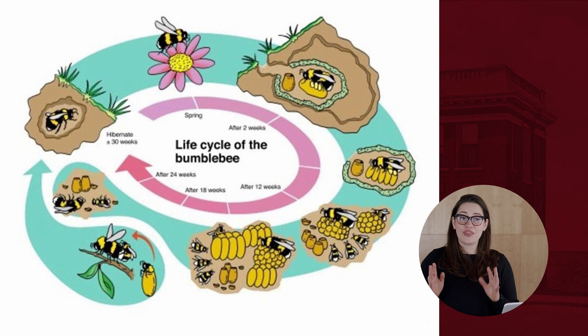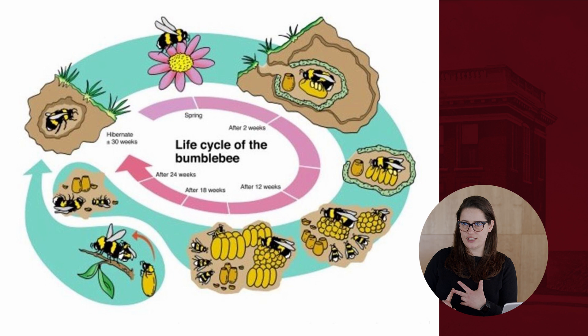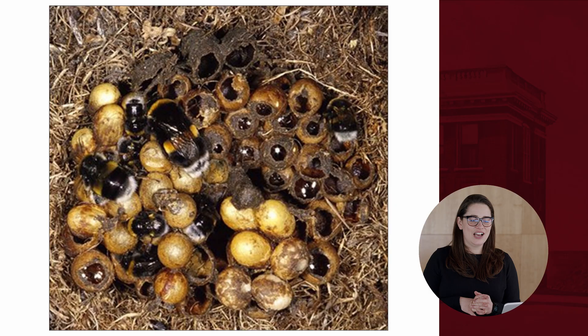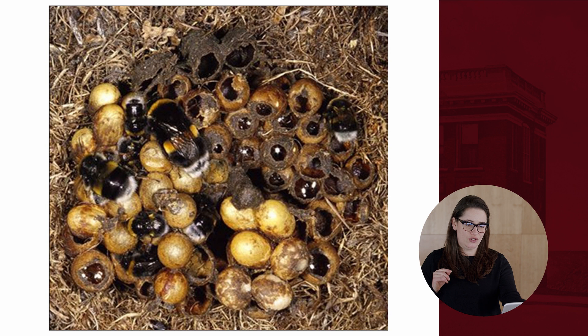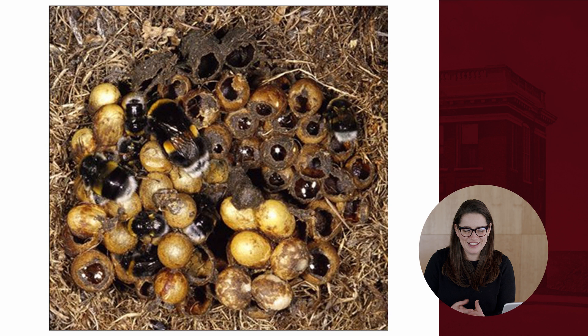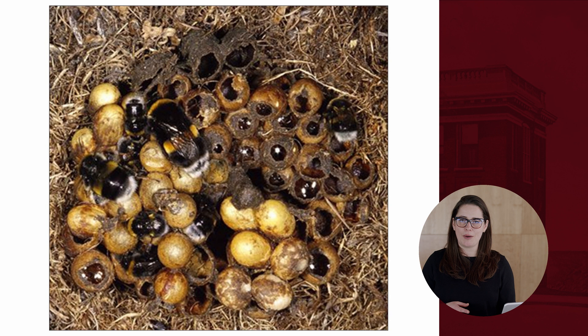That newly mated queen will start a new nest the following year. Inside a bumblebee nest, you can see the large queen, worker bees, developing bees in closed nest cells, and old nest cells containing bumblebee honey — which is what they use to feed themselves. There isn't enough bumblebee honey to harvest, but it's essential for the colony.